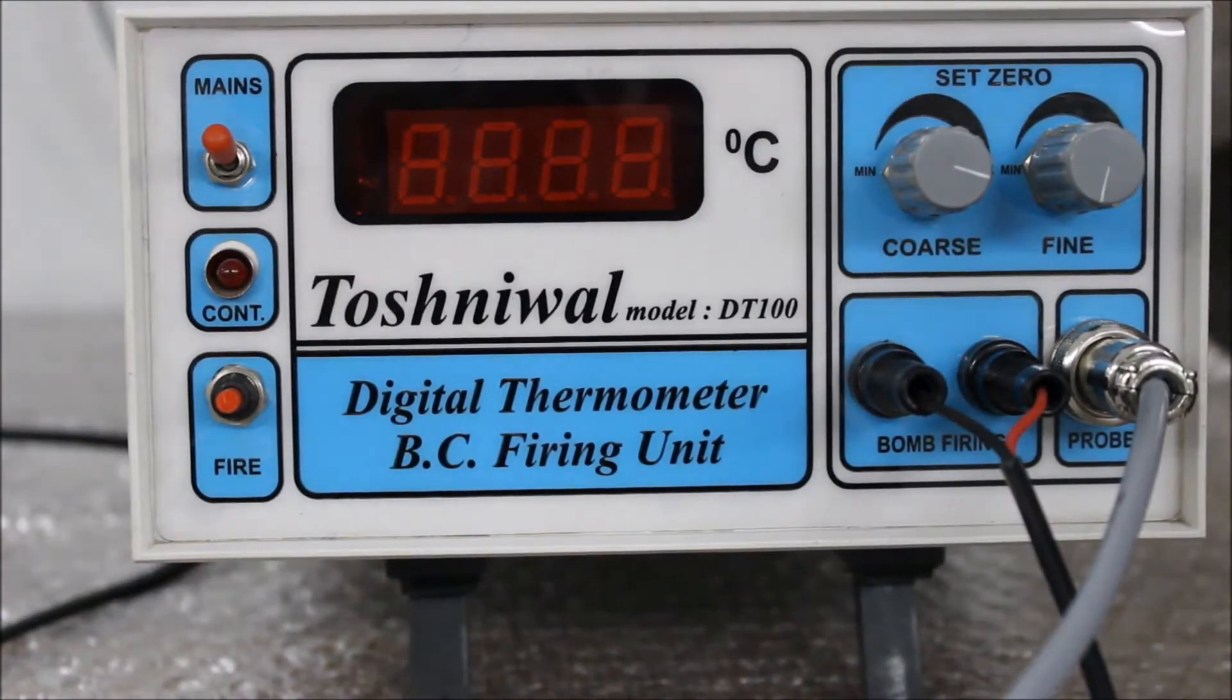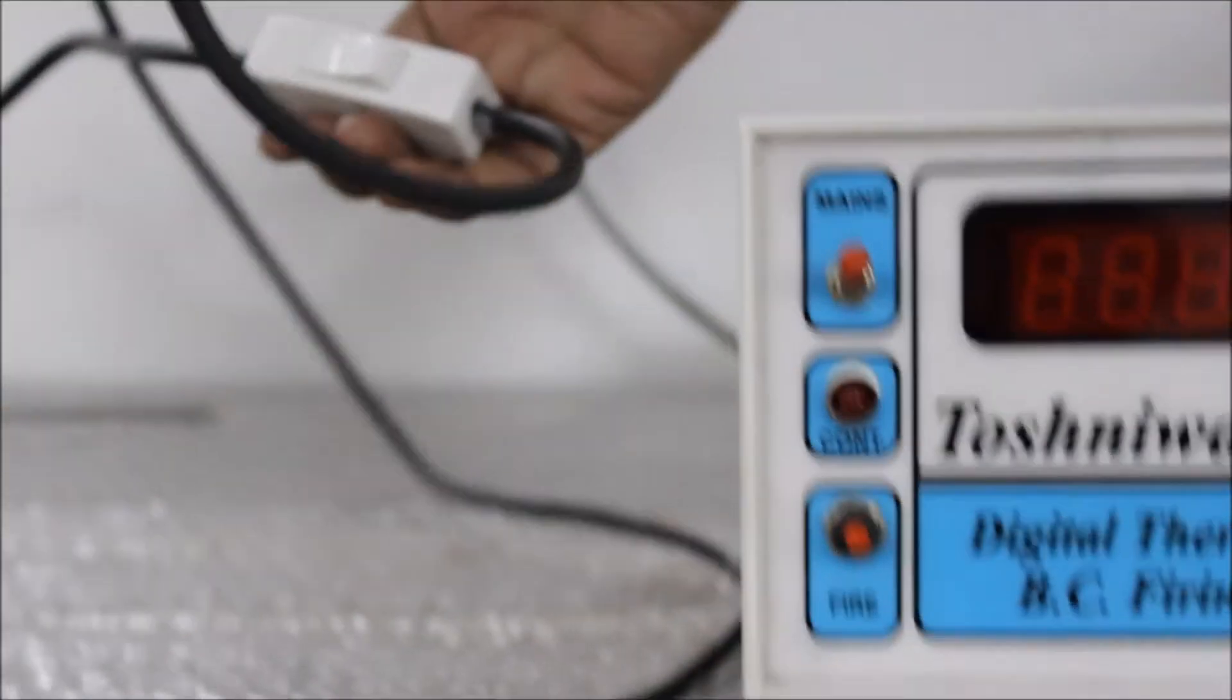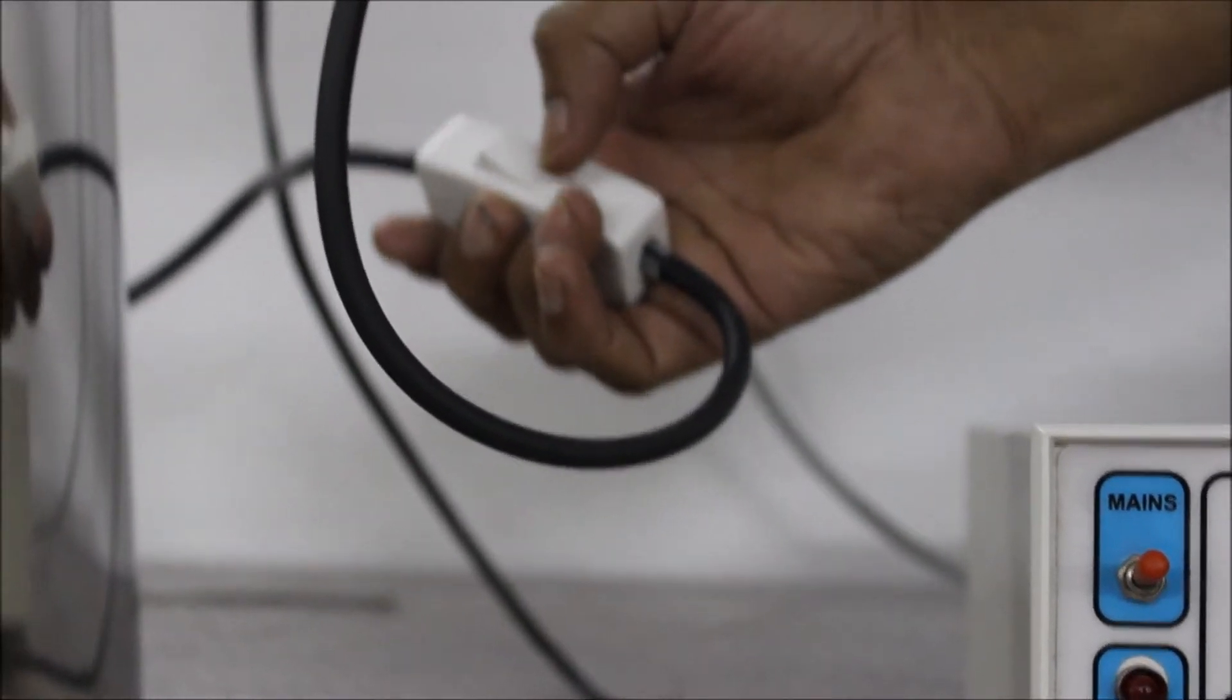After doing so, we will switch off the stirrer. Once that is done, we can disassemble the bomb.